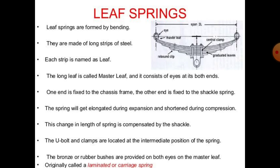The U-bolt and clamps are located at the intermediate position of the spring. A U-bolt and clamps are connected in the intermediate position, and the U-clamp is connected to the U-bolt. Bronze or rubber bushes are provided on both eyes of the master leaf. The eyes are connected to the master leaf spring. This leaf spring is also called a laminated or carriage spring because it is used in heavy goods vehicles.